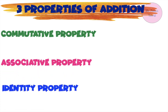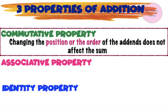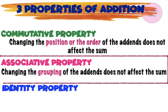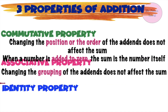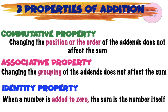Commutative property states that changing the position or the order of the addends does not affect the sum. Associative property states that changing the grouping of the addends does not affect the sum. Identity property states that when a number is added to 0, the sum is the number itself. These are the three properties of addition.